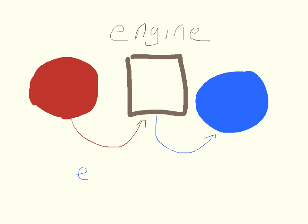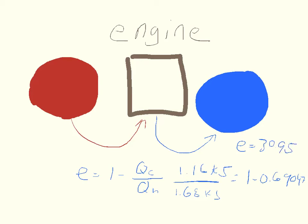We say that the efficiency of the engine is equal to 1 minus the energy transferred from the cold reservoir divided by the energy transferred from the hot reservoir. It tells us exactly what those amounts are. From the hot reservoir it says the engine absorbs 1.68 kilojoules, and from the cold reservoir it expels 1.16 kilojoules. When we divide this number up, we get 1 minus 0.690476. So the efficiency of this engine is 30.95%.